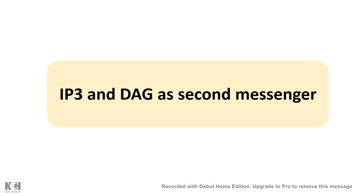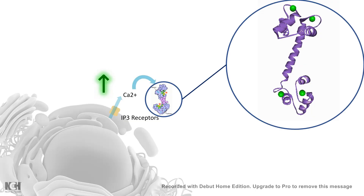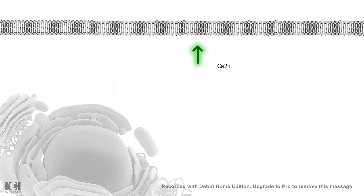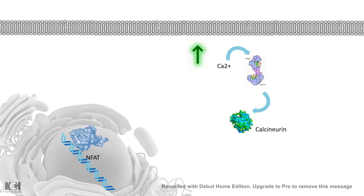Once in the cytosol, calcium can perform many functions. The sudden calcium increase is detected by sensor molecules called calmodulin. Calmodulin has four calcium-binding domains which sense the sudden increase in calcium level, and it can interact with several different modulators to give different outcomes. In one case, calmodulin can activate phosphatases, which allow a nuclear transcription factor to be mobilized to the nucleus and give rise to transcription.